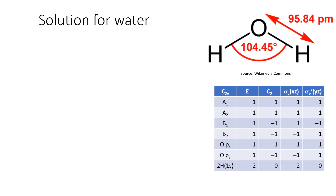On this slide we can see in the character table the new rows for the oxygen px, the oxygen py, and the two H atoms taken together — at least the 1s orbital on each of those atoms. With the px orbital, which is in the plane of the screen horizontally, it obviously returns 1 for the identity. The C2 rotation — 180 degree rotation — simply takes the positive lobe onto the negative lobe, so that returns minus 1. Then the sigma xz, which is the plane of the screen, just returns the same orbital as it's in the plane.